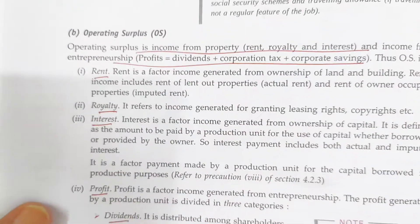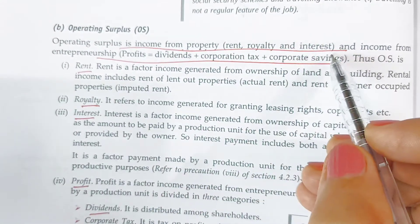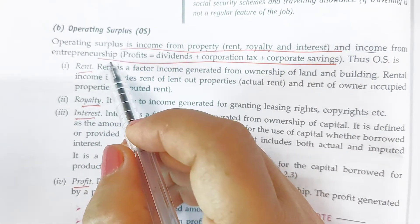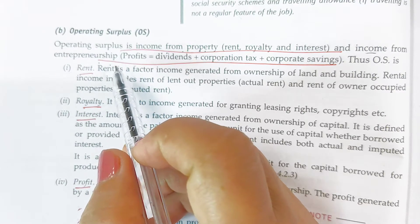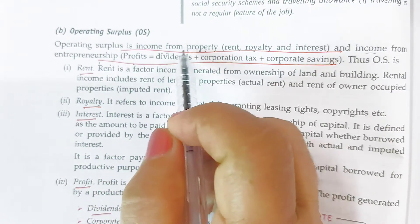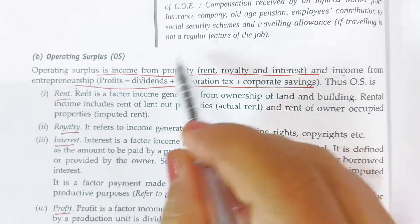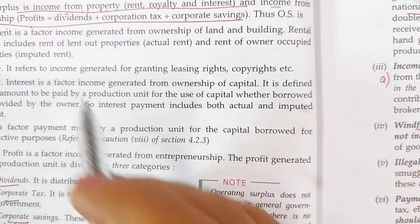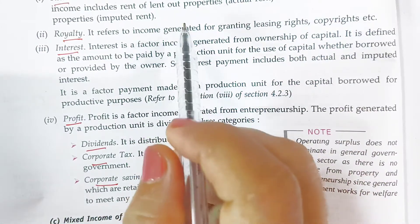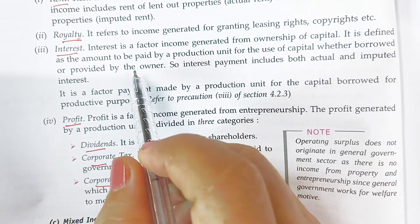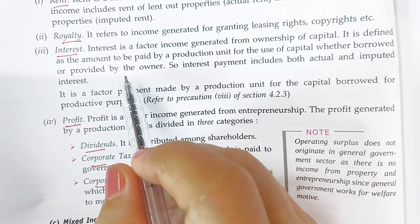The second factor income is called operating surplus — income from property and entrepreneurship. Operating surplus includes income from property, such as rent, royalty, and interest, and income from entrepreneurship which is profit. Rent is the factor income generated from the ownership of land or building — the owner of a building charges rent to whoever uses it.